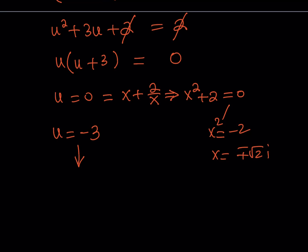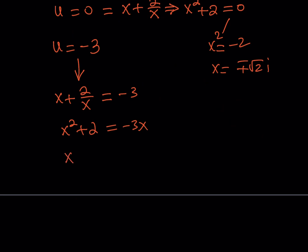So my next solution is going to be x plus 2 over x equals negative 3. Now we can multiply both sides by x again. And that should give me x squared plus 2 is equal to negative 3x. Let's put everything on the same side to make our trinomial more manageable and also factorable because this is factorable, x minus 1 and x minus 2.